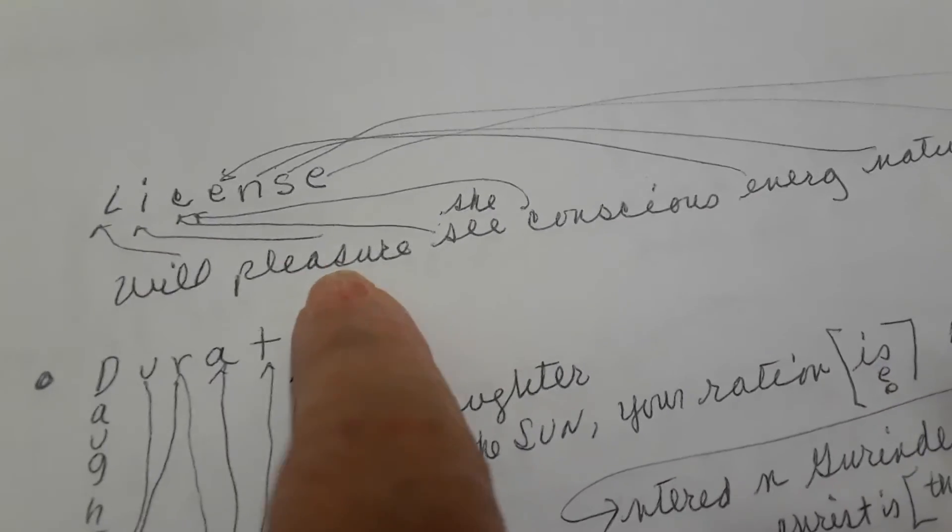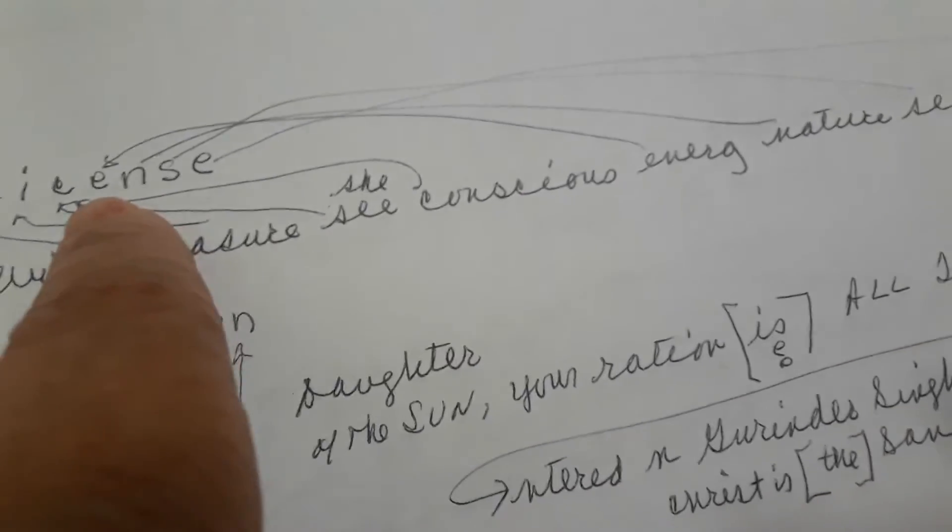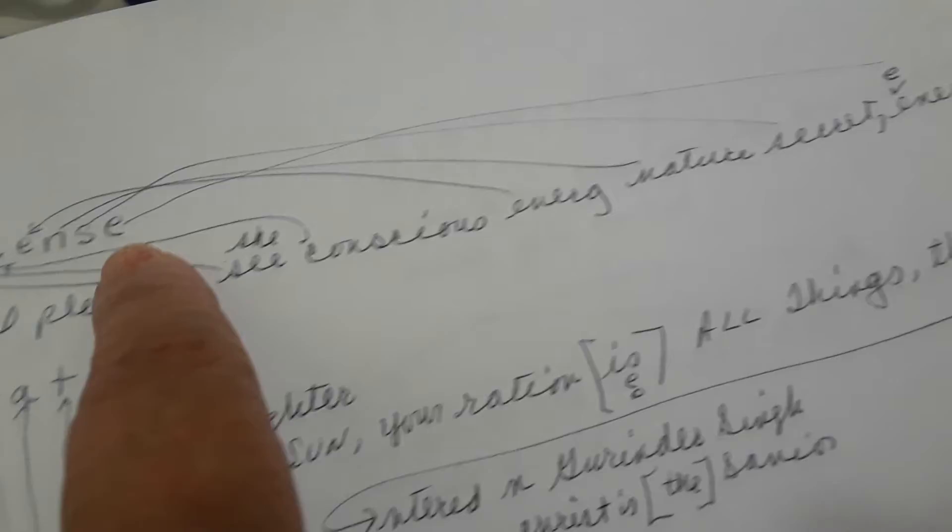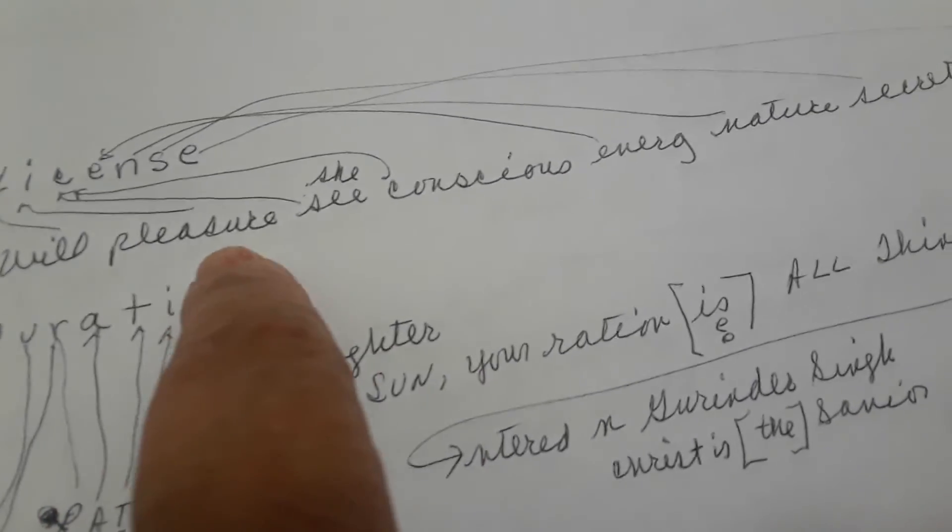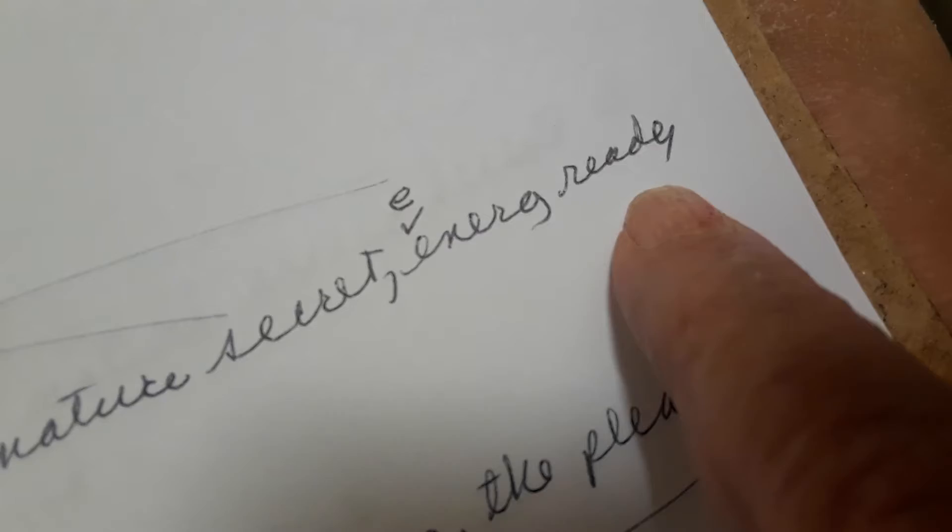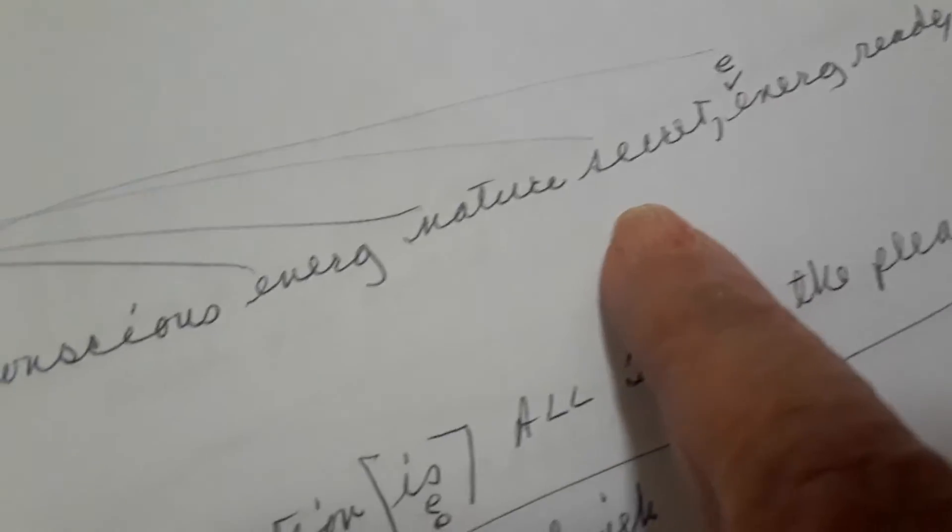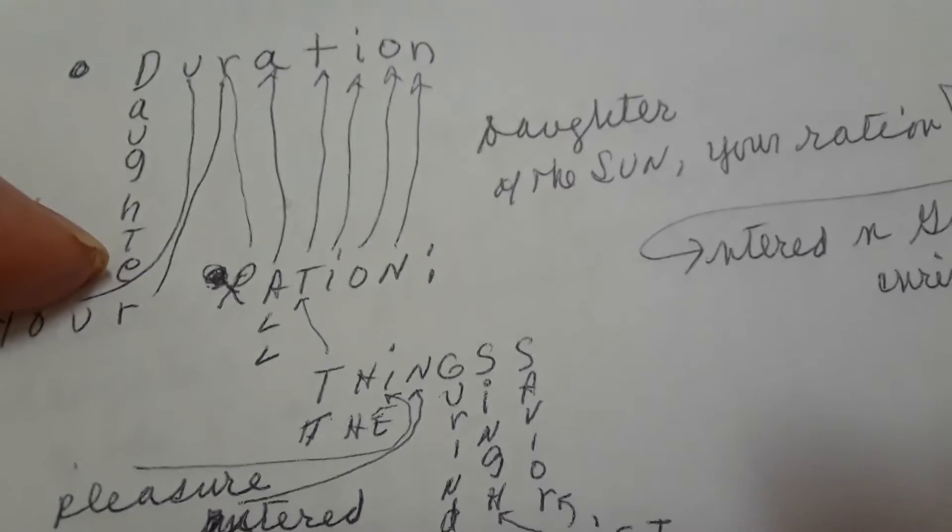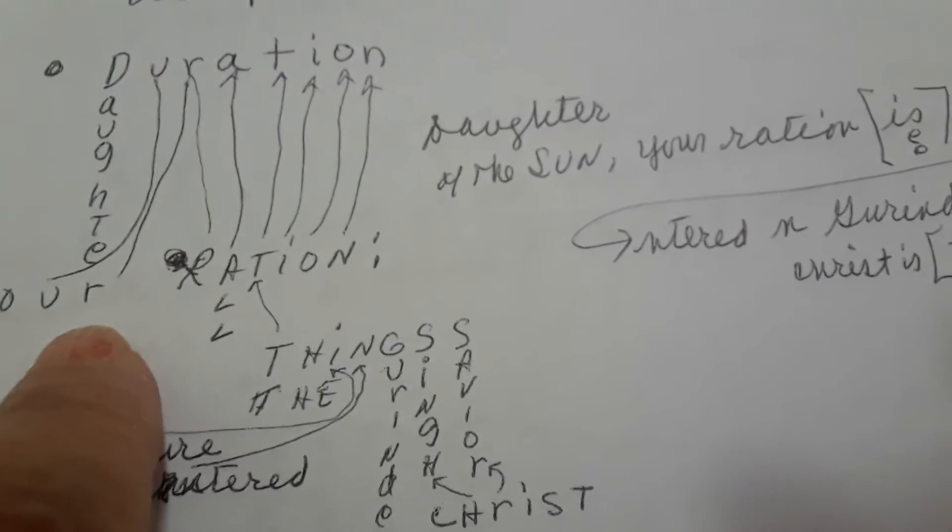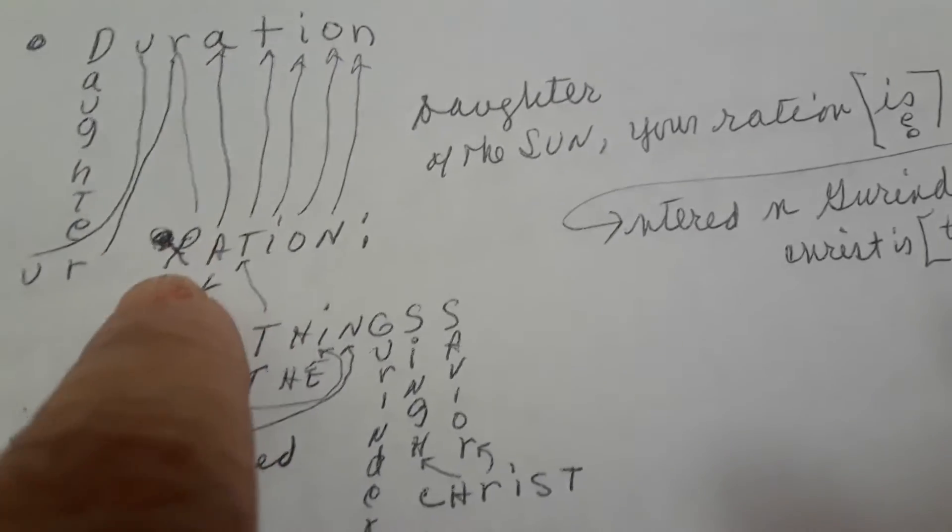License. L for will, I for pleasure, C for see, E for energy, C for conscious then E for energy, N for nature, S for secret, E for Eve energy. Will pleasure to see conscious energy. Nature's secret is Eve's energy, reader. Yeah, Eve is an energy reader. And that's nature's secret. Her nature as an energy reader has been a secret. No one knew or few knew and didn't believe it anyway. Duration. D for daughter of the sun, your ration is at her. You are at her. Ration. Daughter, your ration is at her.